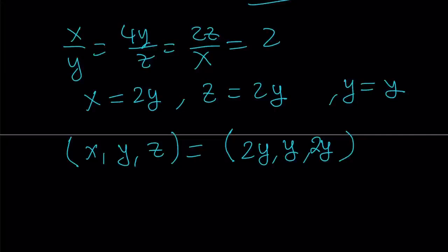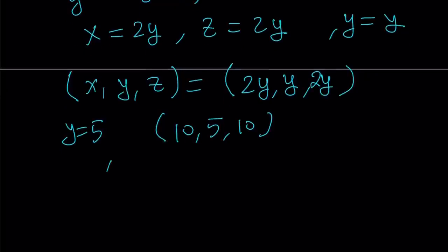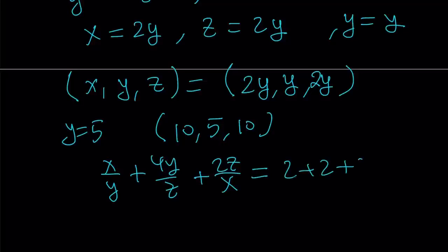For example, suppose y is equal to 5. Then if we have 10, 5, and 10, then the sum x over y plus 4y over z plus 2z over x is going to be written as 2 plus 2 plus 2, and that is going to be the minimum value. If you try other combinations, you're not going to get minimum value, which means you're going to get something greater than 6.